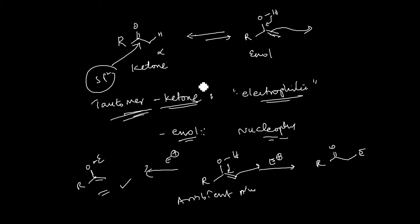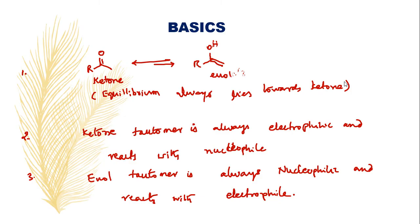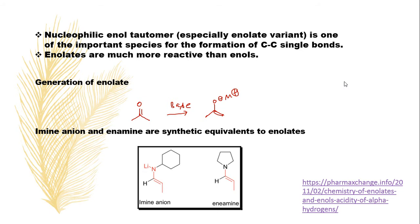So there are two tautomers: one is ketone and one more is enol. Tautomer ketone acts as an electrophile and tautomer enol acts as a nucleophile. The nucleophilic enol tautomer, especially the enolate variant, is one of the important species for the formation of C-C single bonds.